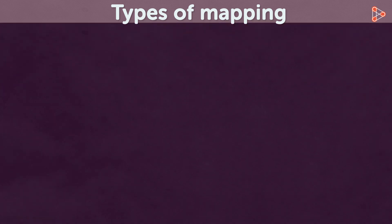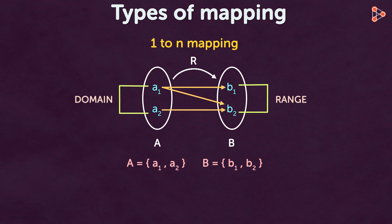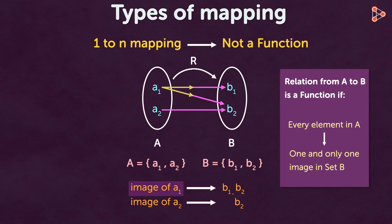Now let's look at the second type of mapping, which is one to many mapping. This is when an element in the domain has more than one image in the range. A1 has two images B1 and B2, and A2 has an image B2. If the mapping is one to many, then the relation is not a function, because an element in set A has more than one image in set B. For it to be a function, every element in set A must have one and only one image in set B.